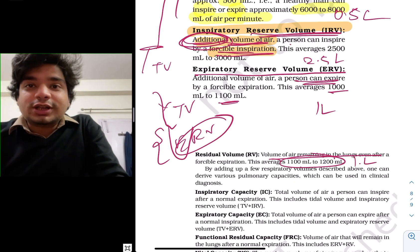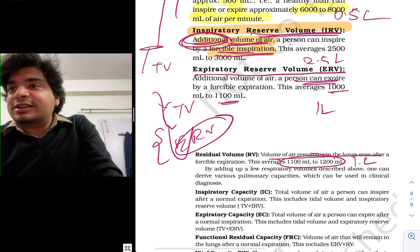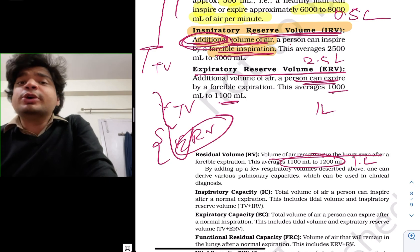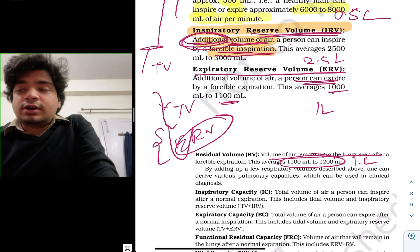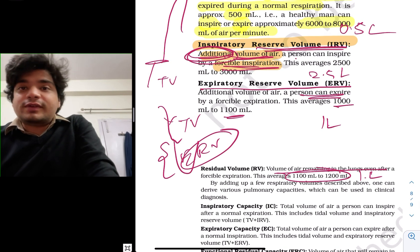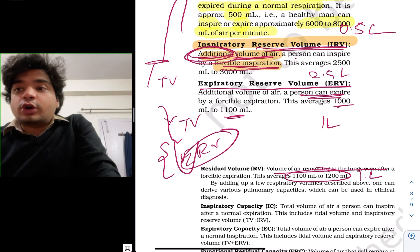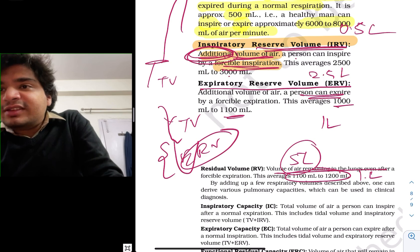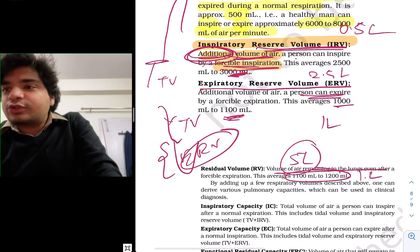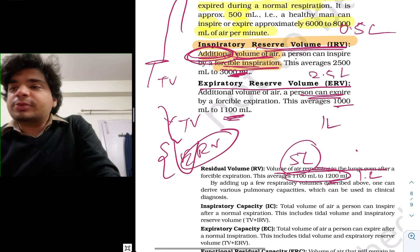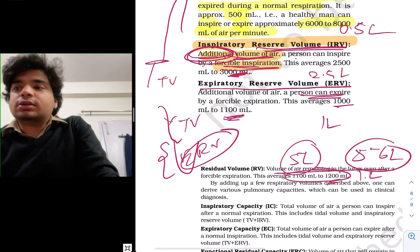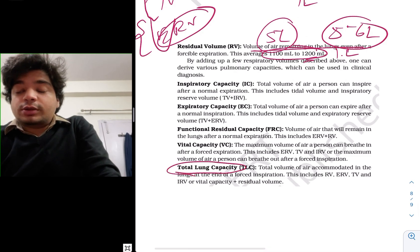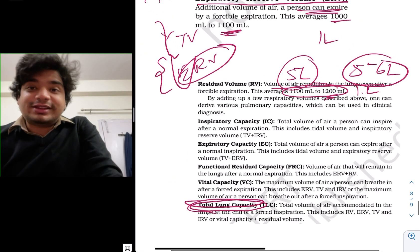Let's calculate the total lung capacity. Adding all values: 1.1 plus 1 plus 2.5 plus 0.5 gives approximately 5 liters. So the total lung volume is around 5 liters, and it can be considered 5 to 6 liters. The total lung capacity is every volume combined.